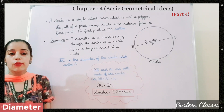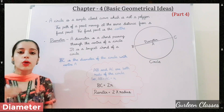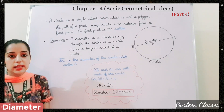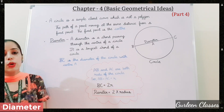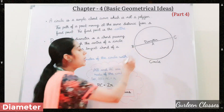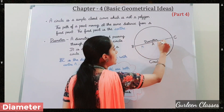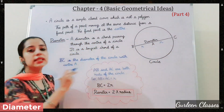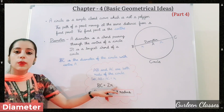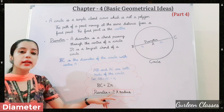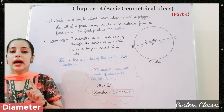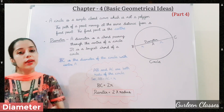Radii are drawn from the center to the circle — that is the radius. Radii is the plural of radius. So, AB = R and AC = R, therefore BC = 2R. Diameter is equal to 2 times the radius — diameter is double the radius.